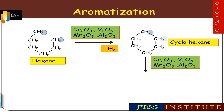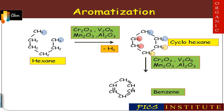In aromatization, splitting of bonds involves removal of neighboring hydrogen to form pi bonds. Similarly other hydrogens are removed to form further pi bonds, and in this manner we get benzene as the end product. So aliphatic compound is converted into aromatic compound, which is why the reaction is called aromatization.